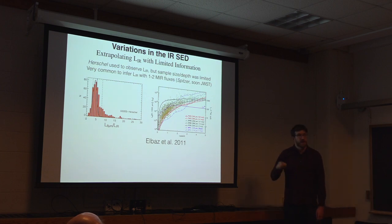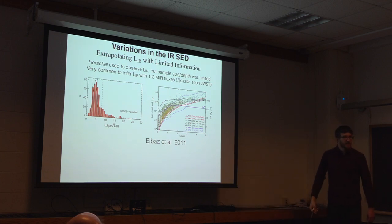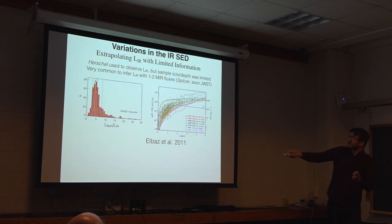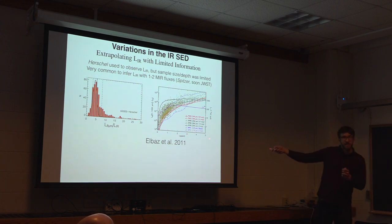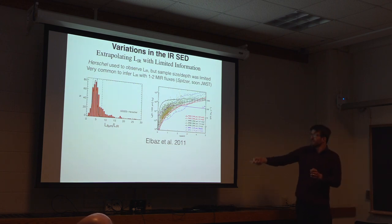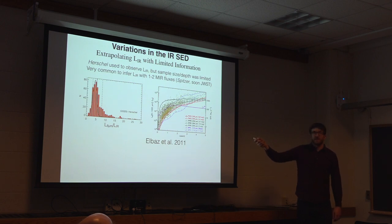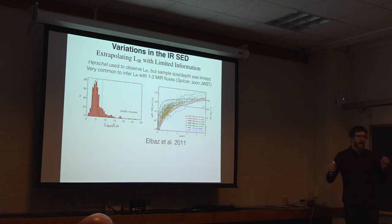The L8 micron divided by the total infrared luminosity. Most of the time we only have an 8 micron point. In this rare case we have total infrared luminosities, so this is a quantity of interest because the variation in this quantity tells you how wrong your models normally are.